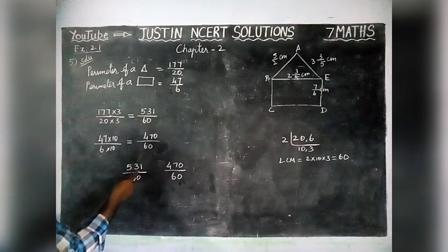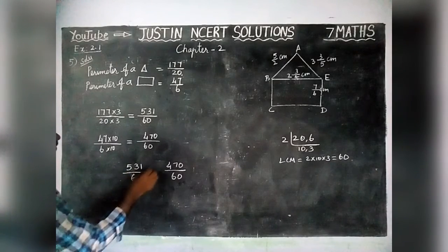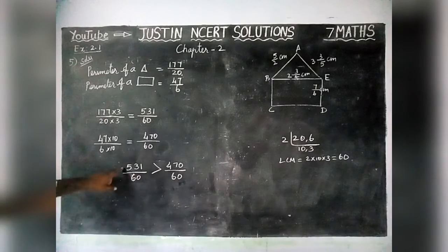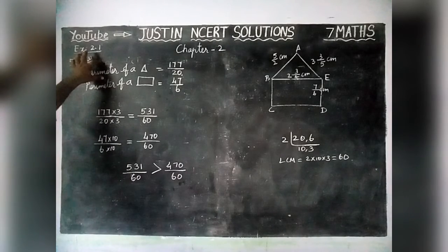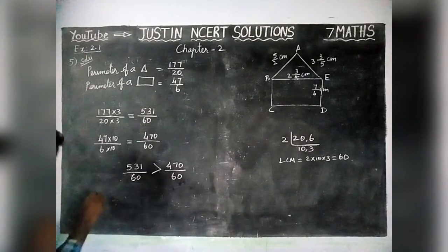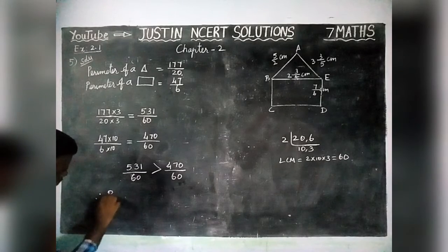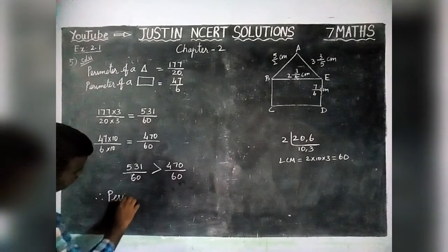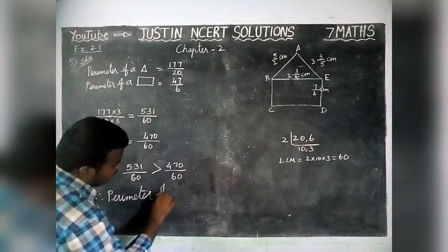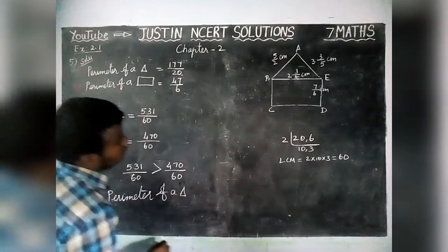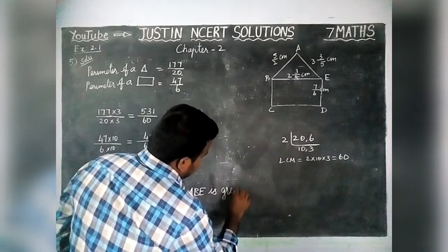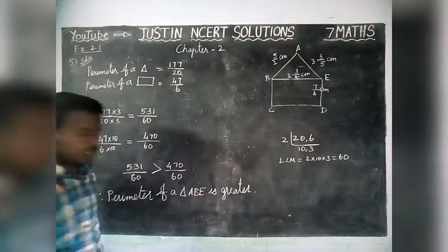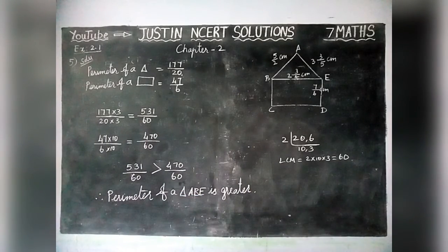531/60 corresponds to the perimeter of the triangle. Therefore, the perimeter of triangle ABE is greater than the perimeter of rectangle BCDE. Thank you students. Kindly give your suggestions in the comments box and share it with your friends. Thank you.